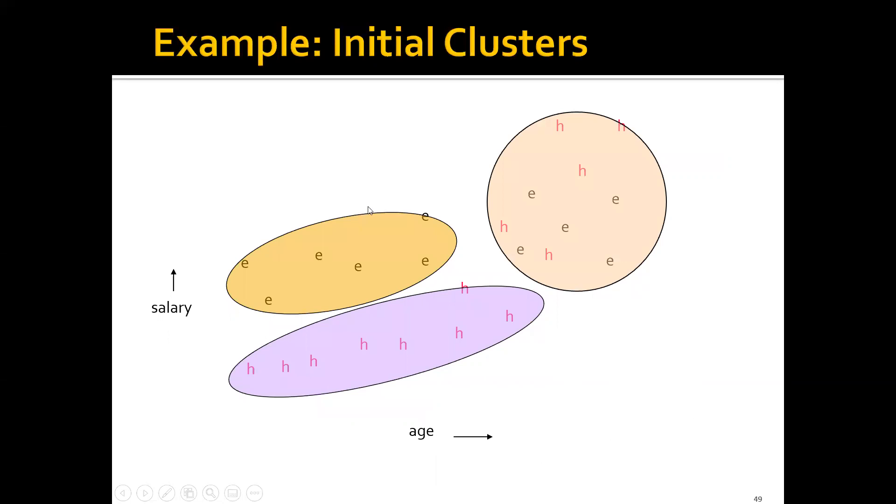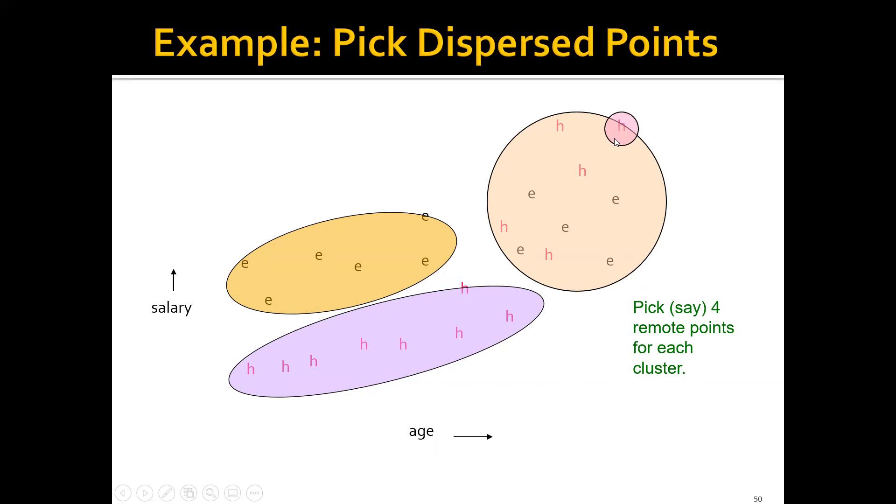For example, let's say these are the initial clusters from the CURE algorithm. For this cluster, if we want to find the representatives, we first pick one point here. We pick the second point that's the farthest away from the first one, then pick the third and fourth points. Then we move these four remote points about 20% towards the center. These points are the representatives for this cluster. We do similar things for these other two clusters.